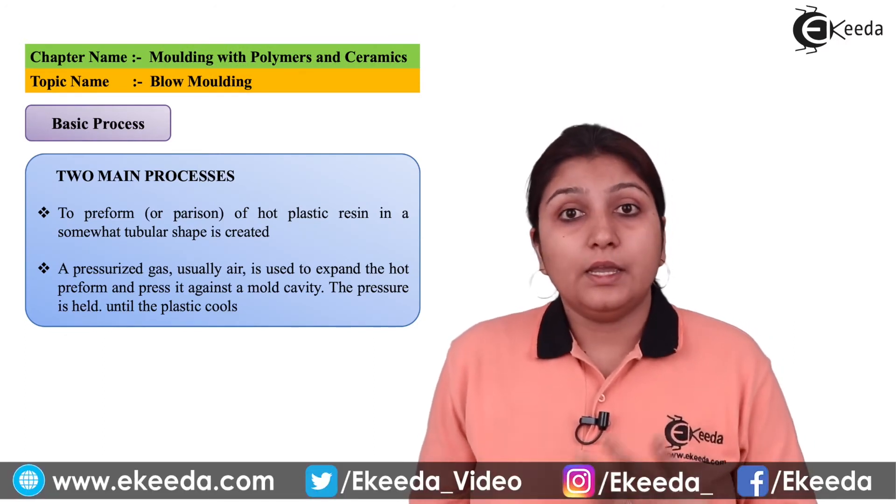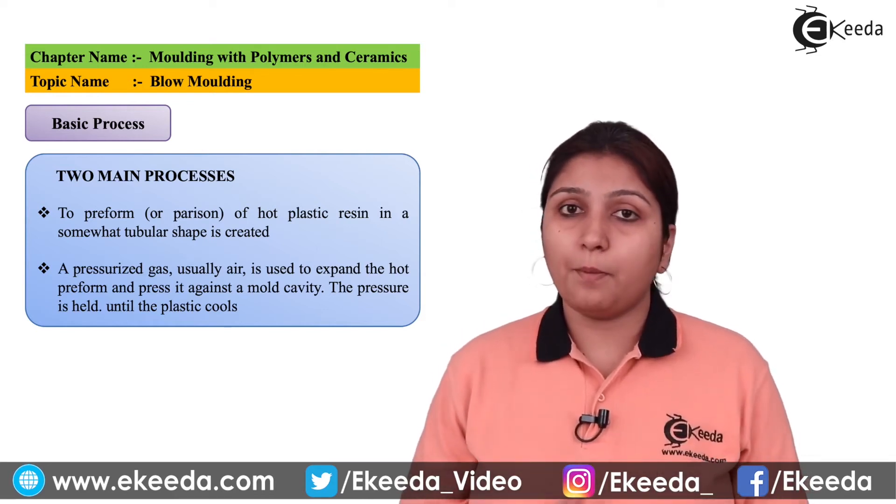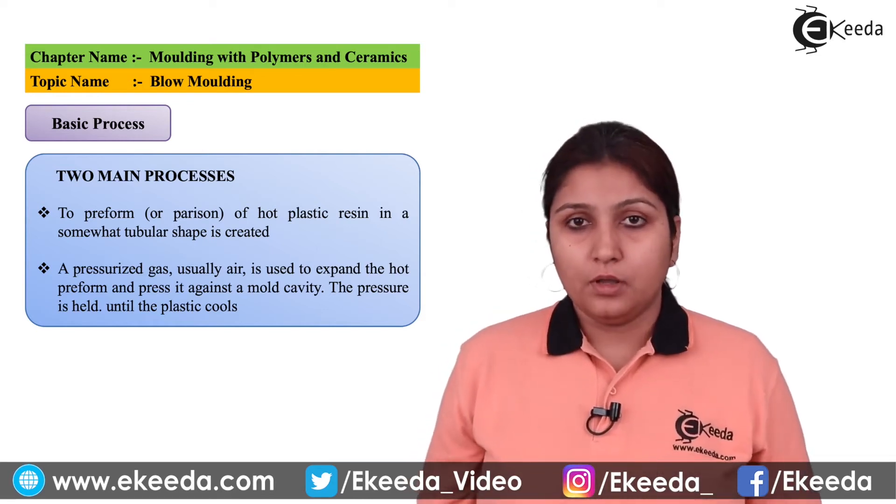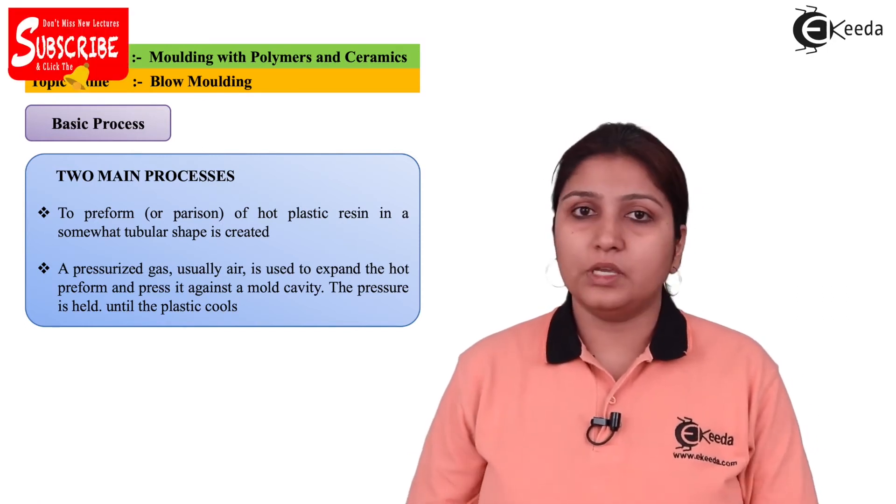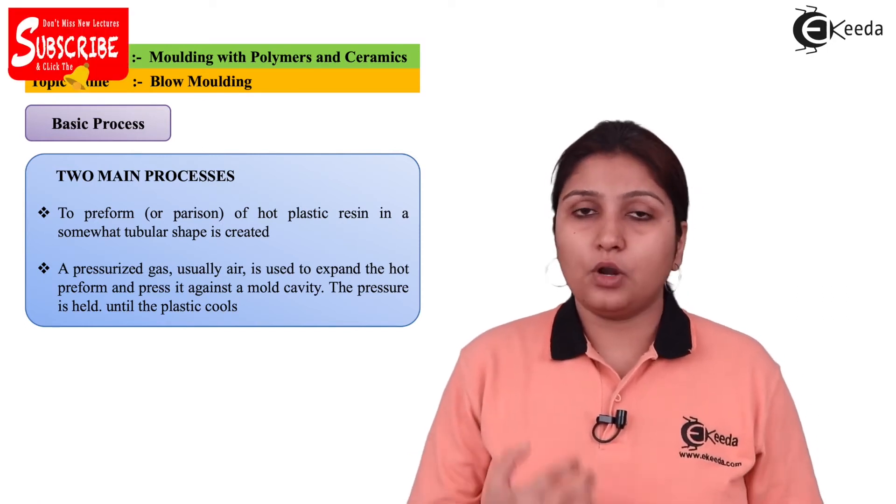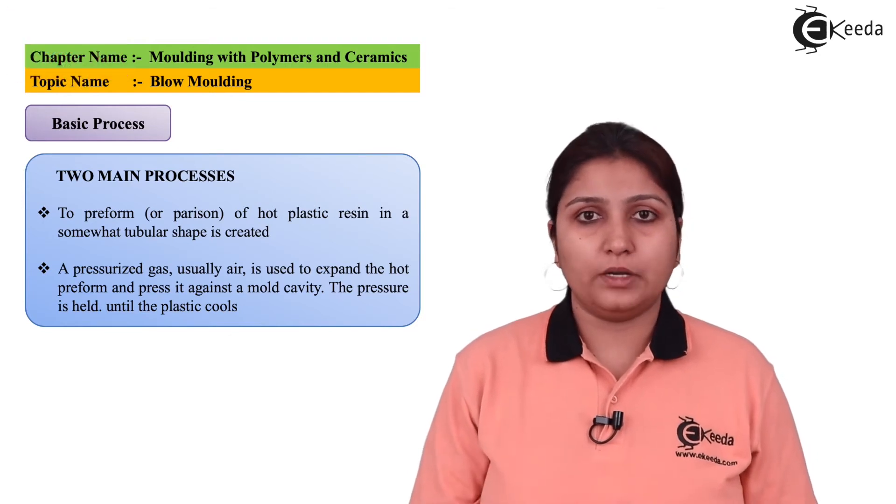Number one is heated parison. If your parison is not heated properly, it won't get blown. If more heating is provided, it can melt. And if less heating is provided, blowing cannot be done. So adequate or optimized heating should be provided to your parison.